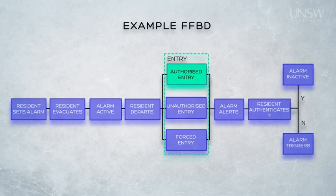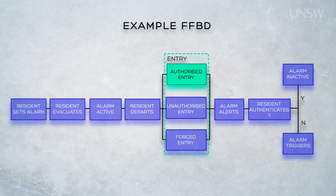Unlike the RBS, which just shows logical relationships, the FFBD provides the requirements engineer with information about the sequencing of functions. For example, the resident evacuates after they've set alarms, as you can see in the first two functions. All forms of entry are equally possible, as shown in the middle of the diagram. So the first two functions — setting the alarm and evacuating — are in series, while the entry functions are shown in parallel. That greatly assists the requirements engineer in identifying the interfaces.